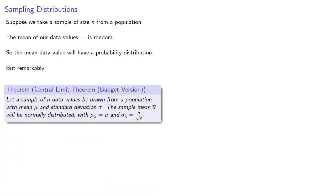We'll use the following formulation. Let a sample of n data values be drawn from a population with mean mu and standard deviation sigma. The sample mean will be normally distributed with mean equal to the population mean, and standard deviation equal to the population standard deviation divided by the square root of the sample size.